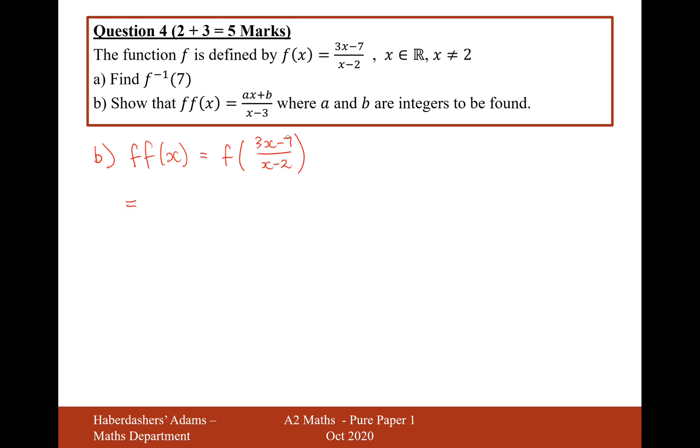So now what we're going to do is we're going to put this function here into both positions where x is in my f of x equation. So it's going to be 3 brackets 3x minus 7 over x minus 2 minus 7 over 3x minus 7 over x minus 2 minus 2.